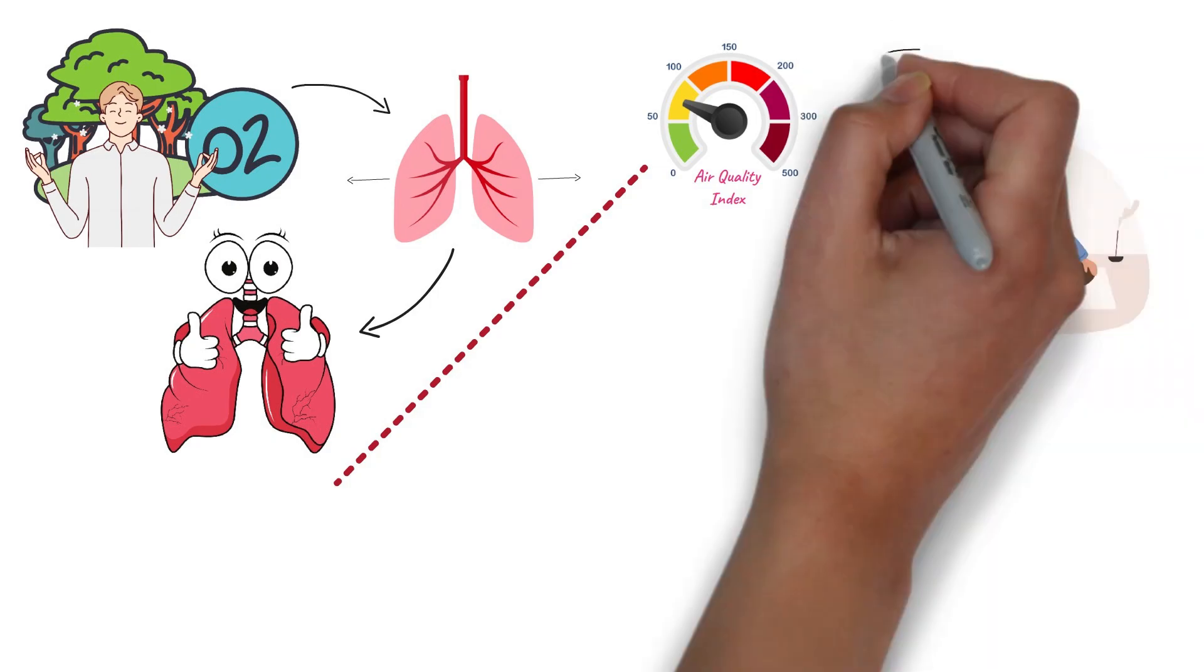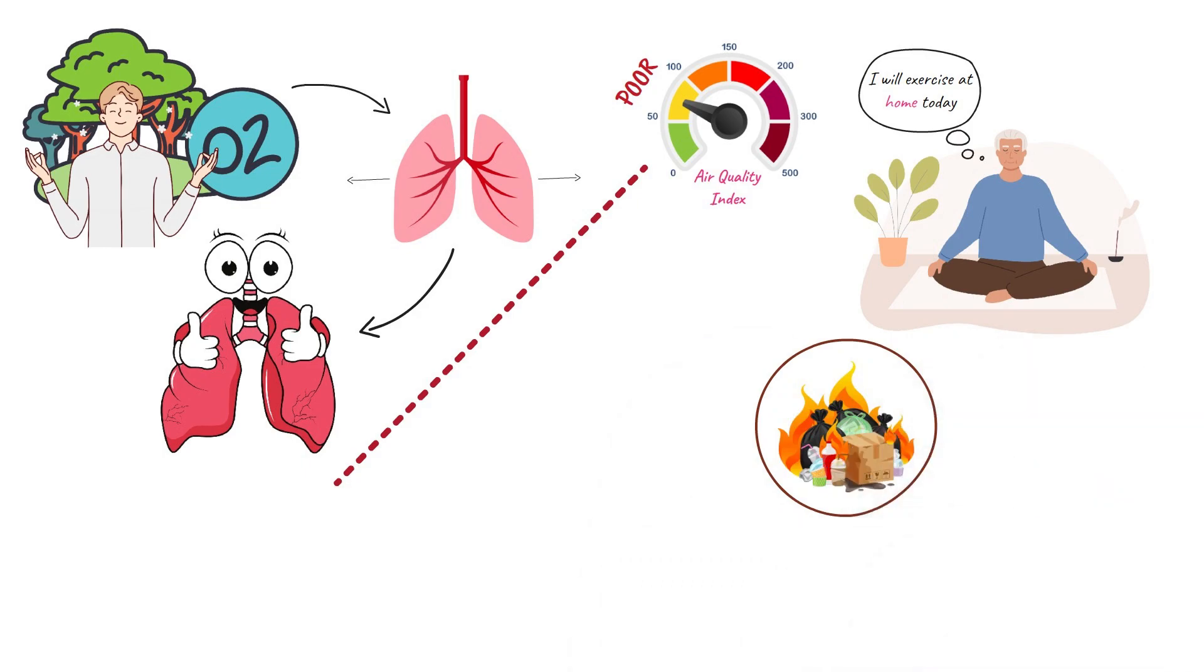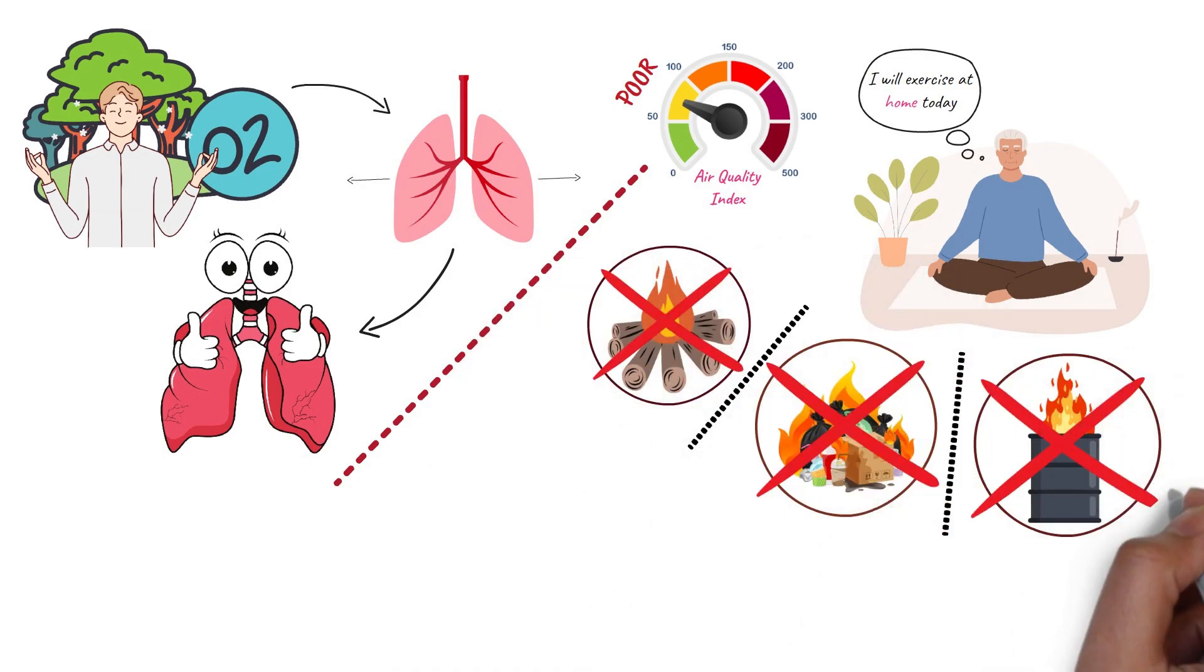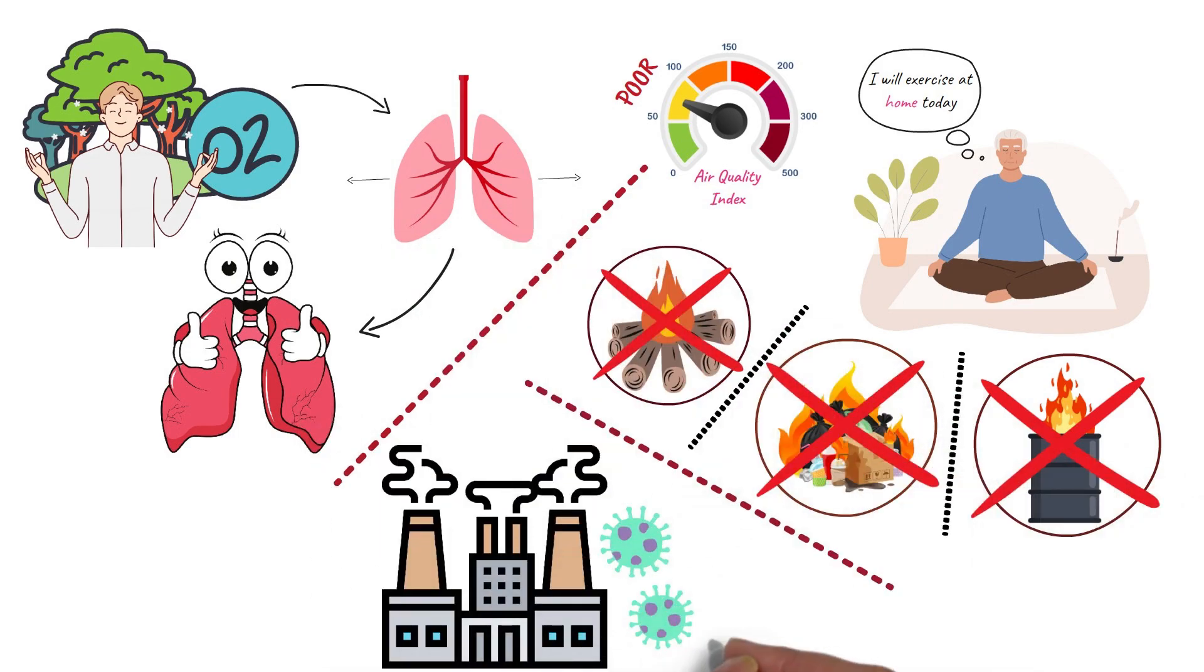Avoid exercising outside when pollution numbers are high and stay away from burning trash, burning wood, or other types of smoke. If you are concerned about pollution or you live in an area with heavy pollutants, you can wear an air filter mask.